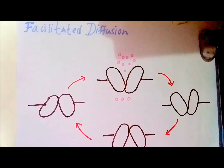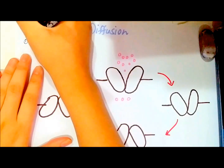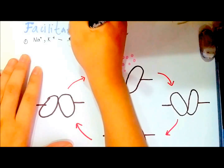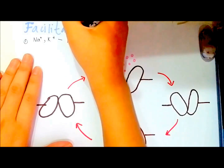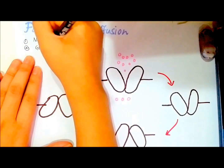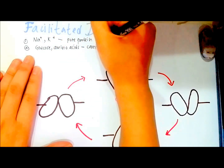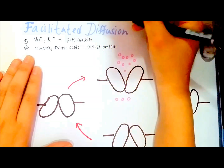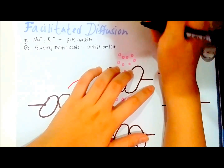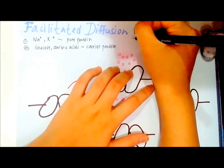Now let's talk about facilitated diffusion. There are two types of molecules that use facilitated diffusion. The first type is sodium ions or potassium ions, which use channel proteins. The second type is glucose or amino acids, which use carrier proteins. Facilitated diffusion means transport of molecules or ions from a region of high concentration to a region of low concentration without using energy.